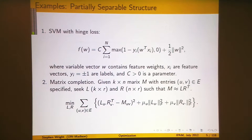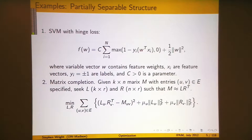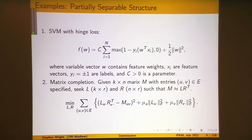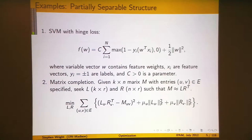Here are familiar examples. For a linear SVM, feature vectors xi have length n, yi is the label (plus or minus 1), and you're learning weights w to predict which class new data falls into. The objective sums over all training vectors — that partially separable structure — with a loss function penalizing w for putting xi on the wrong side, plus a regularization term.